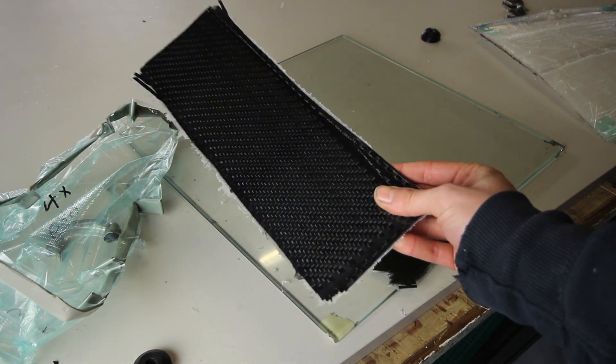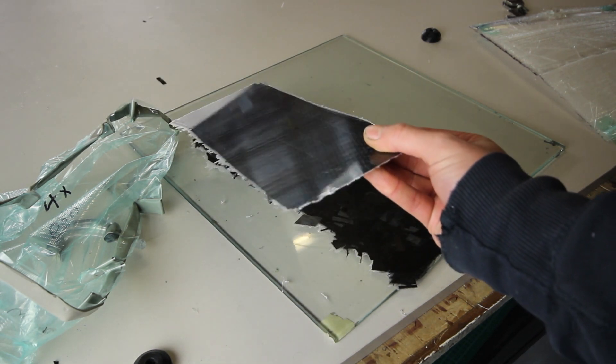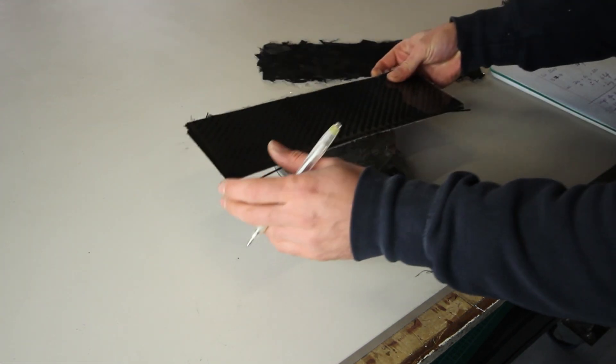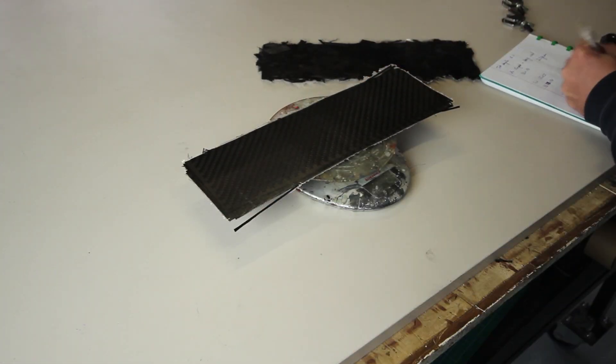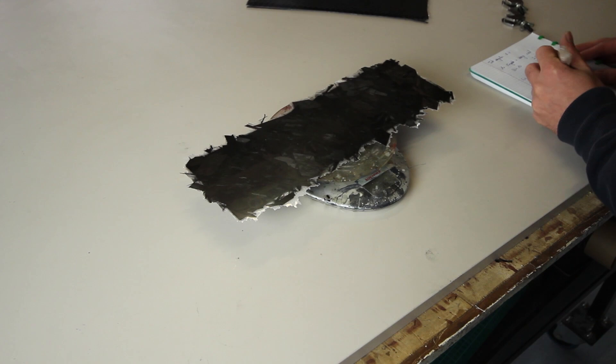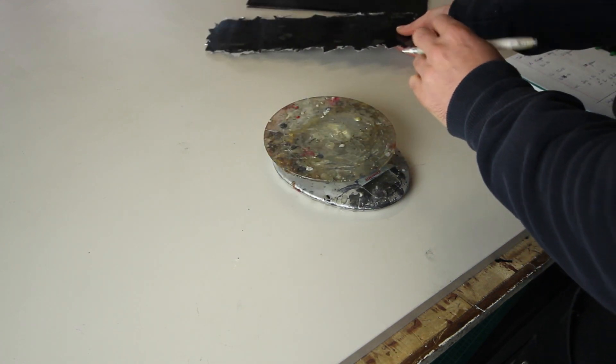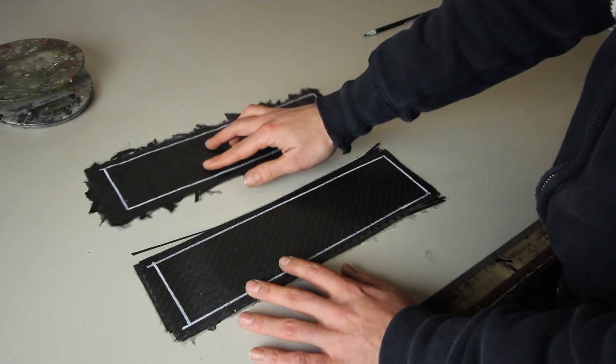This was a 4x650 gram per square meter twill weave and the chop strands with the veil. In theory we will compare the veil with the 650 gram per square meter twill weave from Easy Composites.